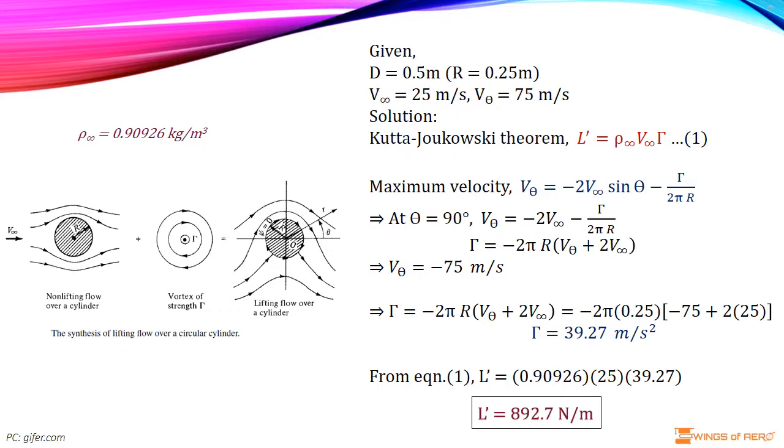Now, we can write this velocity equation for circulation. Then, Γ is minus 2πR times V_θ plus 2V∞. And recalling our sign convention, that Γ is positive in the clockwise direction and V_θ is negative in the clockwise direction.